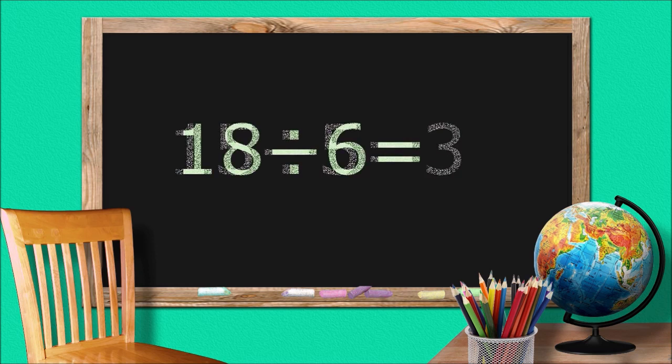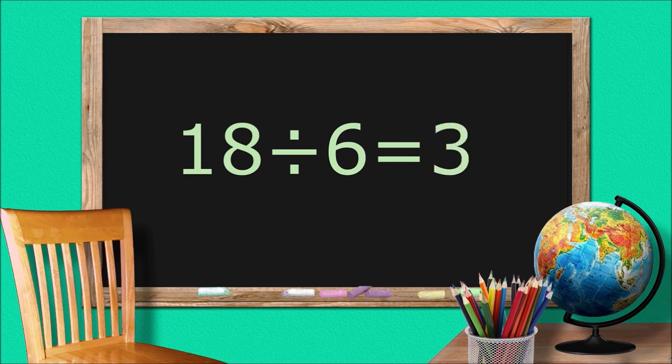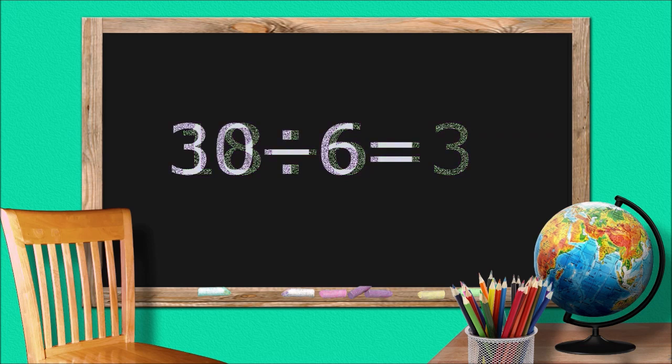Eighteen divided by six equals three. Thirty divided by six equals five.